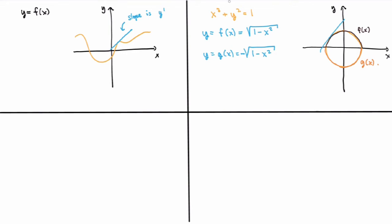In other words, this relation defines implicitly two different functions, f(x) and g(x), giving the two halves of the circle. Once you have these solutions, you can use standard differentiation rules to calculate the derivatives and get the slope of the tangent lines for each point on the circle.